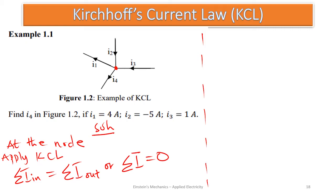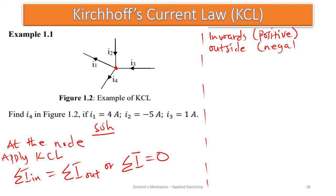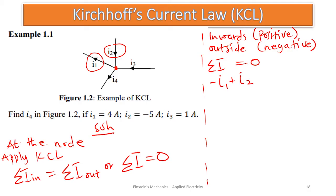Using the algebraic sum of all currents equal to zero, with inward currents positive and outward currents negative: i1 is leaving — negative i1; i2 is entering — positive i2; i3 is also entering — positive i3; i4 is leaving — negative i4. Substituting: negative 4 plus negative 5 plus 1 minus i4 equals zero. This gives negative 8 minus i4 equals zero.